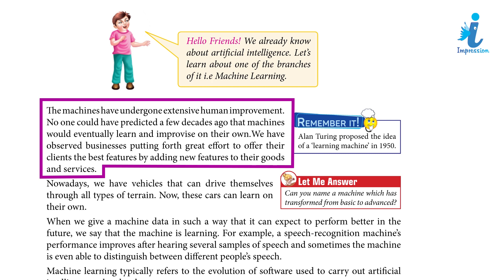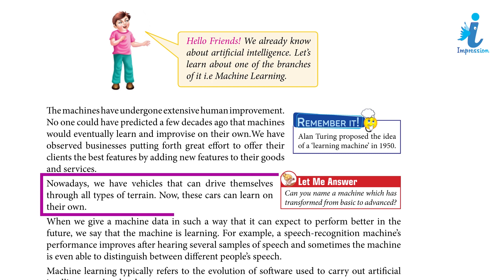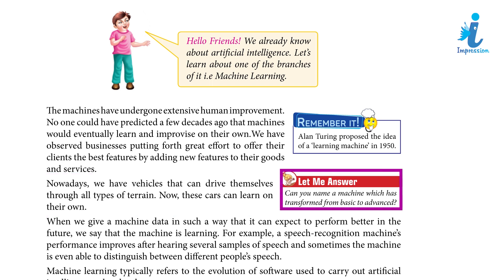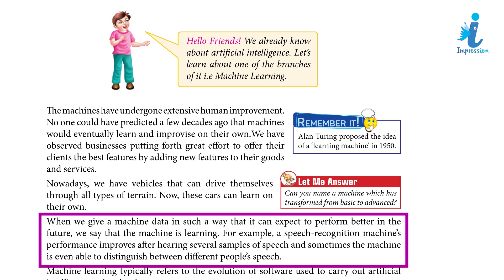No one could have predicted a few decades ago that machines would eventually learn and improvise on their own. We have observed businesses putting forth great effort to offer their clients the best features by adding new features to their goods and services. Nowadays, we have vehicles that can drive themselves through all types of terrain — these cars can learn on their own. When we give a machine data in such a way that it can expect to perform better in the future, we say that the machine is learning.